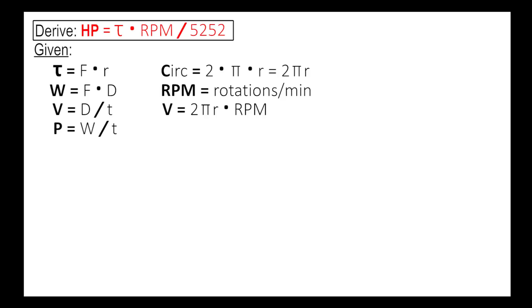We have power, which equals work over time. And finally, we have our definition of horsepower, which is 33,000 foot pounds per minute. Alright, so let's see how this all comes together.